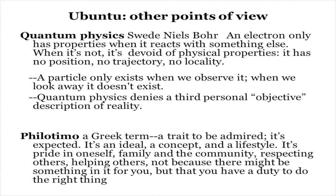Even quantum mechanics shows that properties don't exist except in relationships. An electron, when it doesn't have anything around it, has no position, no trajectory, no locality — it only exists when we observe it. Quantum physics denies a third-person objective description of reality, very much a part of European scientific thought. And interestingly, 'philotimo' — a Greek term for a sense of community, belonging, and having an identity only in regard to involvement in community — captures this same idea.